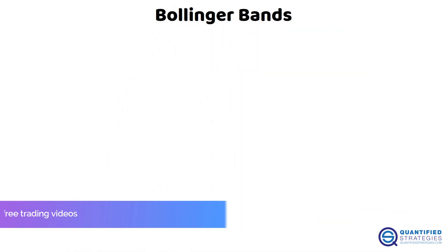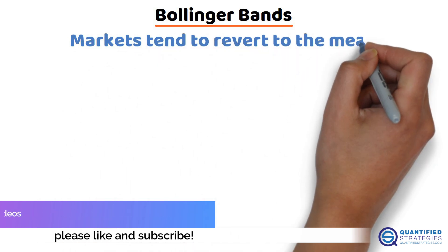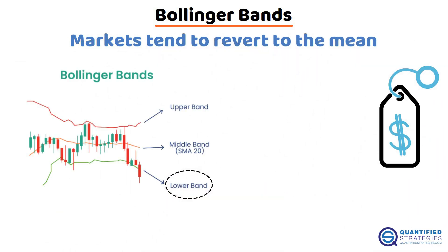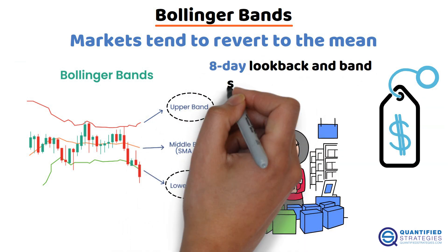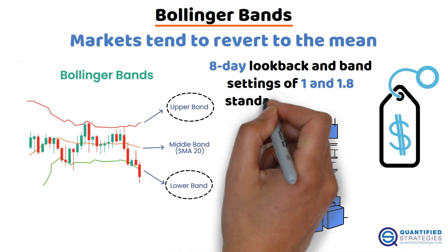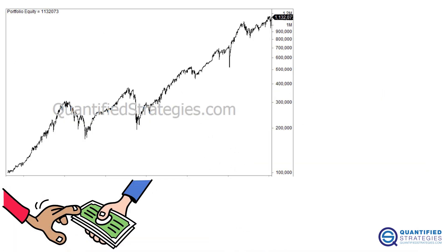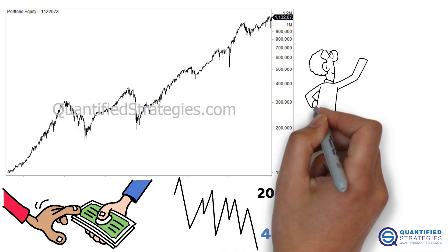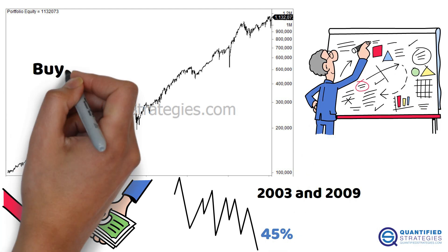Next up, Bollinger Bands. Because markets tend to revert to the mean, we buy when price breaks below the lower band and sell when it breaks above the upper band. We used an eight-day lookback and band settings of 1 and 1.8 standard deviations. Returns looked good overall, but drawdowns reached 45% in 2003 and 2009, mainly because this strategy keeps you in the market more often — similar to buy and hold.